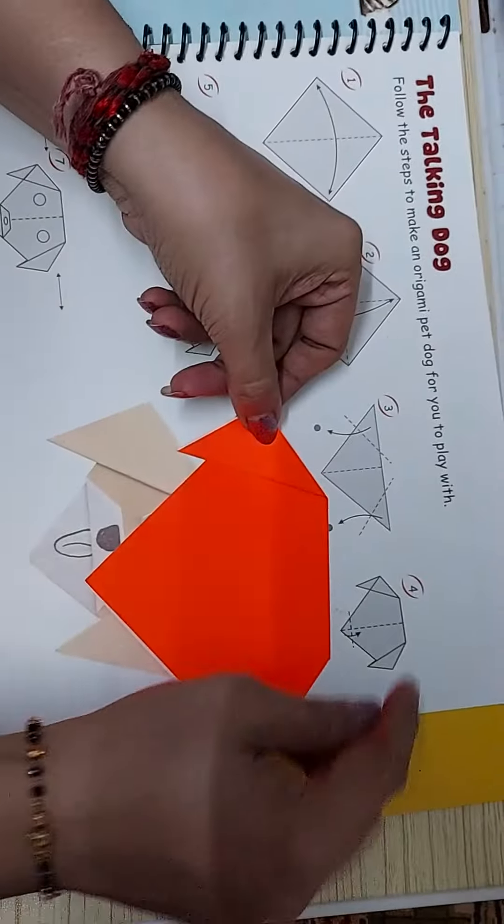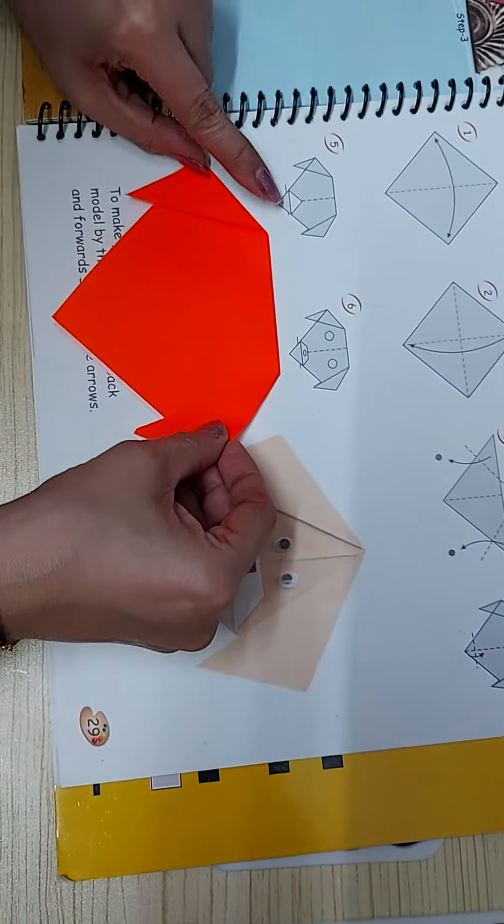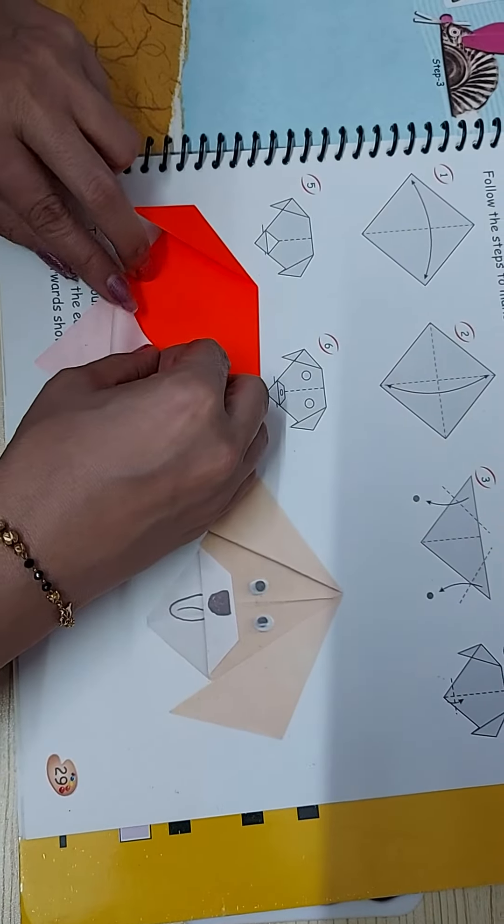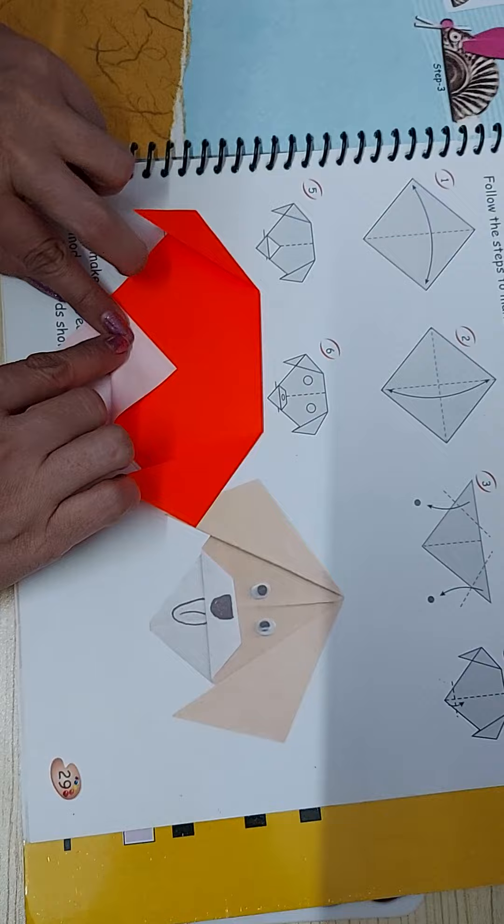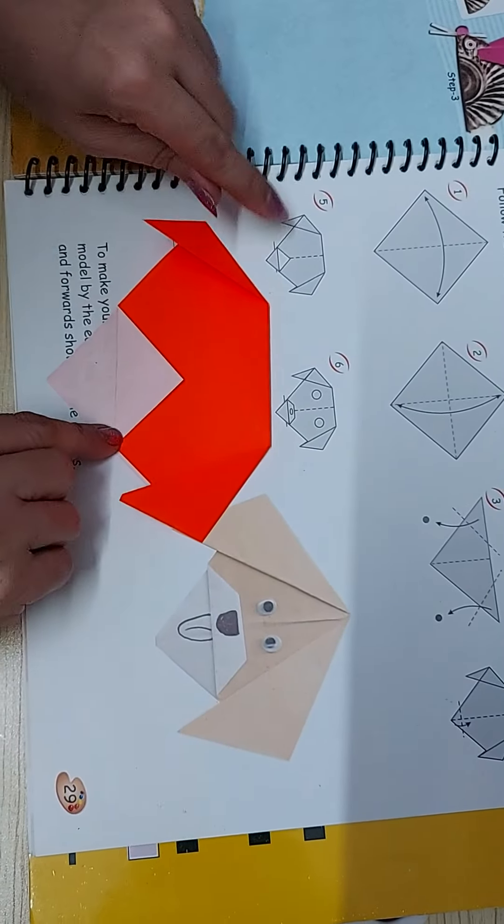Now we are going to step number 5. We are going to make a small mouth like this.